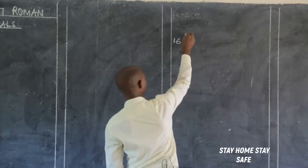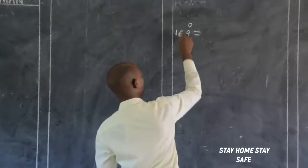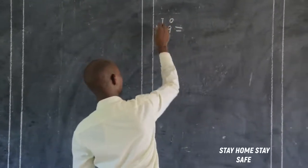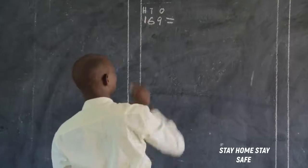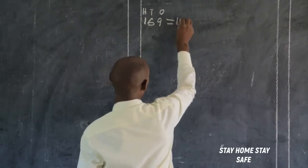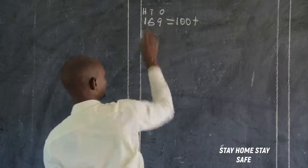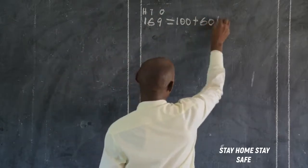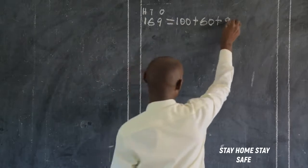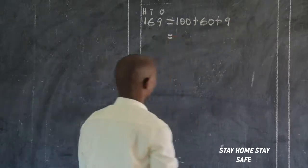Nine is in the place value of ones. Six is in the place value of tens. One is in the place value of hundreds. So, one times a hundred gives one hundred. Six times ten gives sixty. Sixty plus nine times one gives nine.